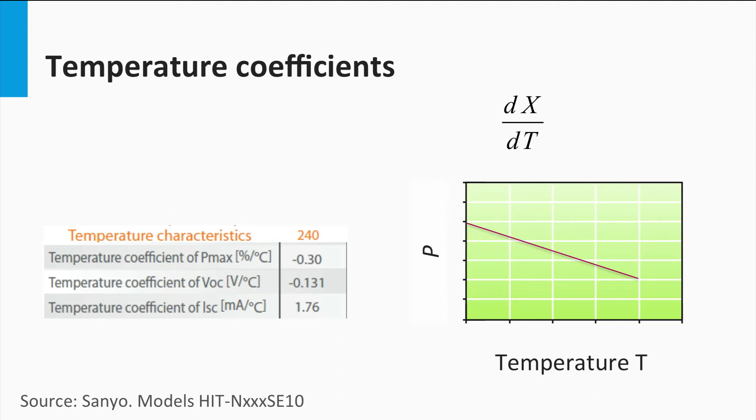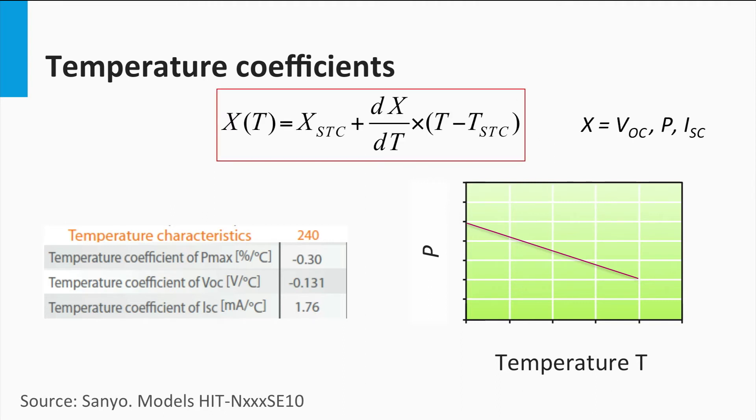Given these coefficients, how do we calculate the PV output with respect to the temperature change? We can use this simple equation. The term dx/dt denotes the temperature coefficient of the particular parameter. The reference temperature taken for this calculation is the standard test condition temperature, which is 25 degrees Celsius.